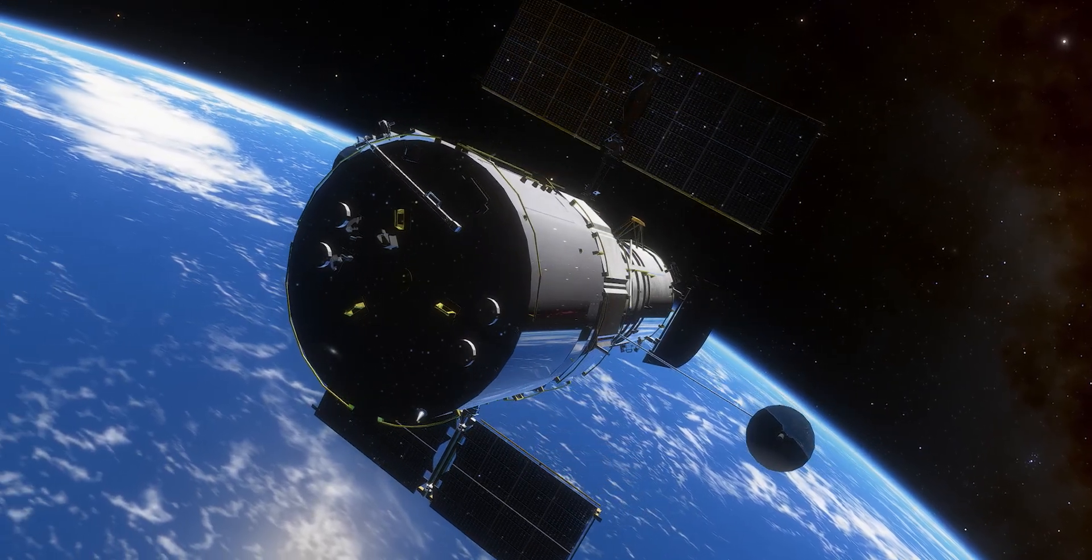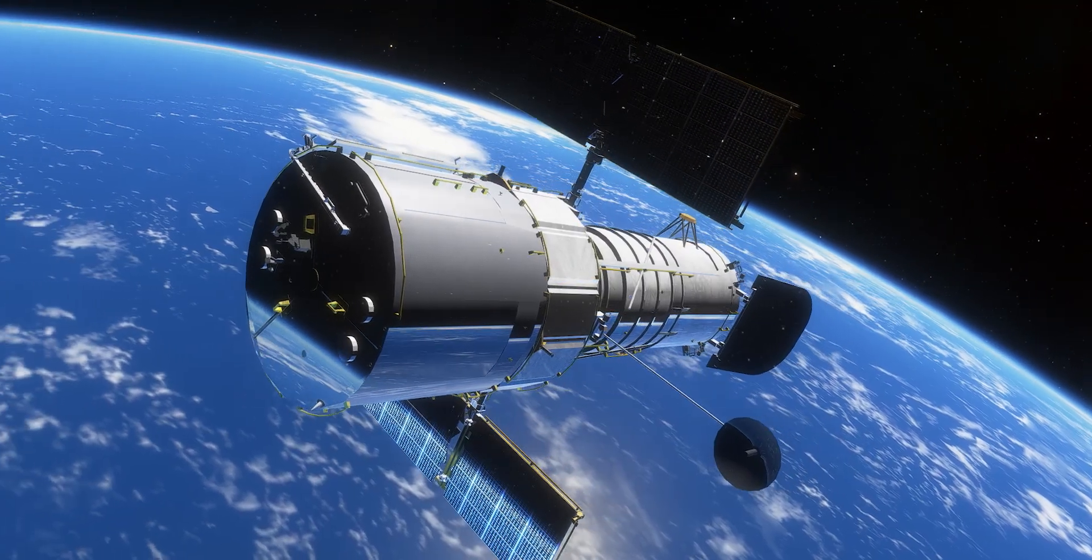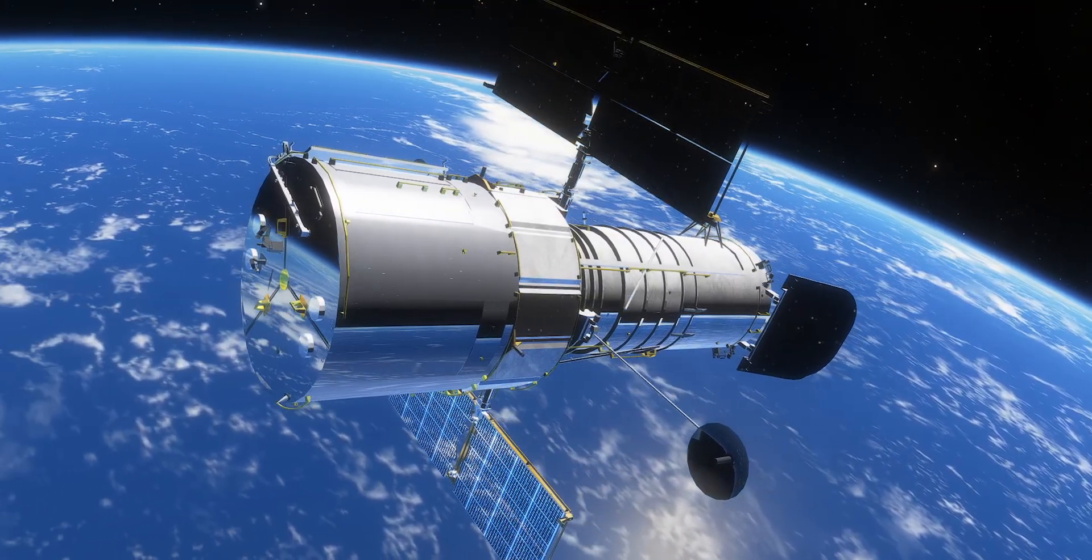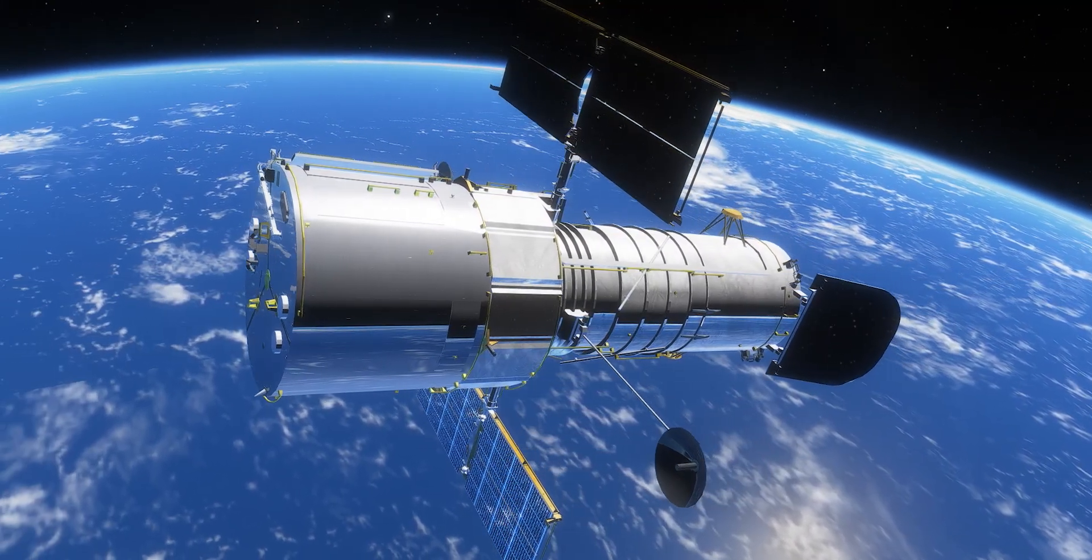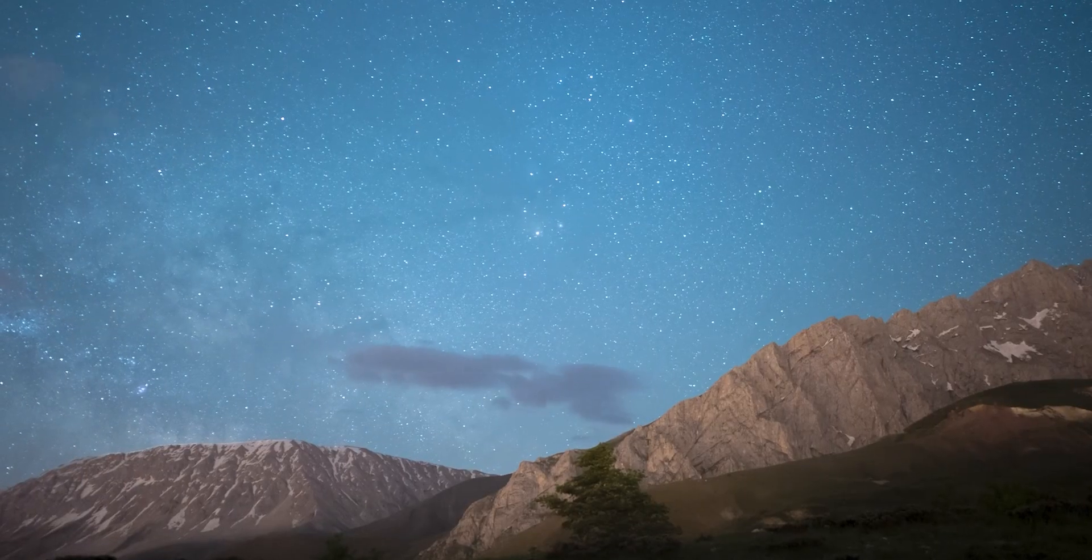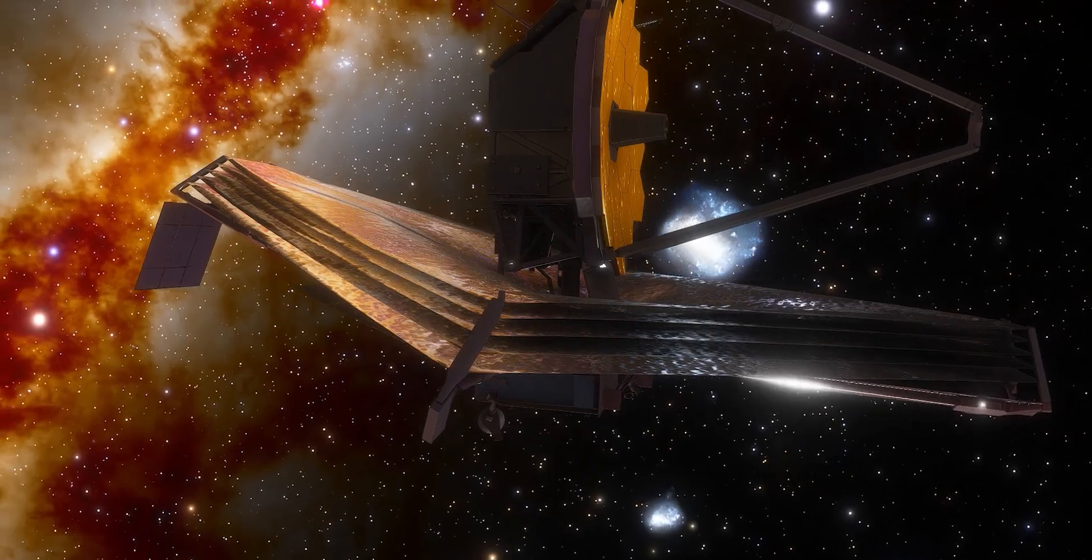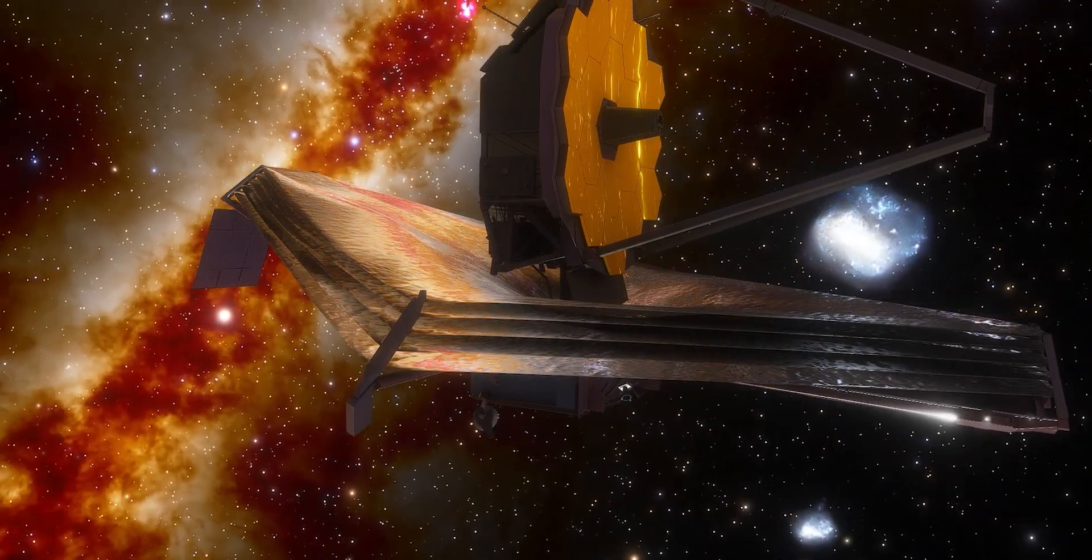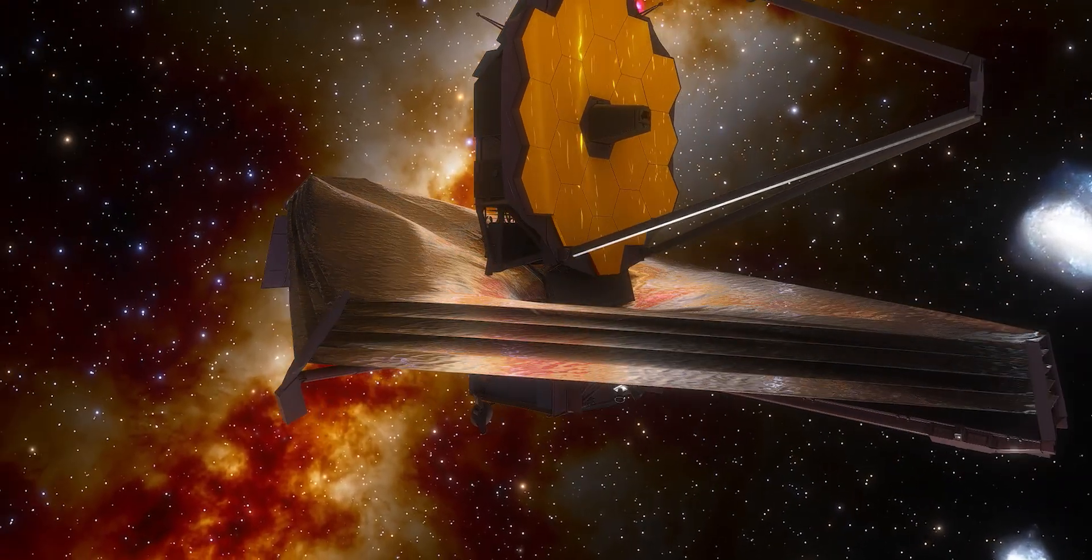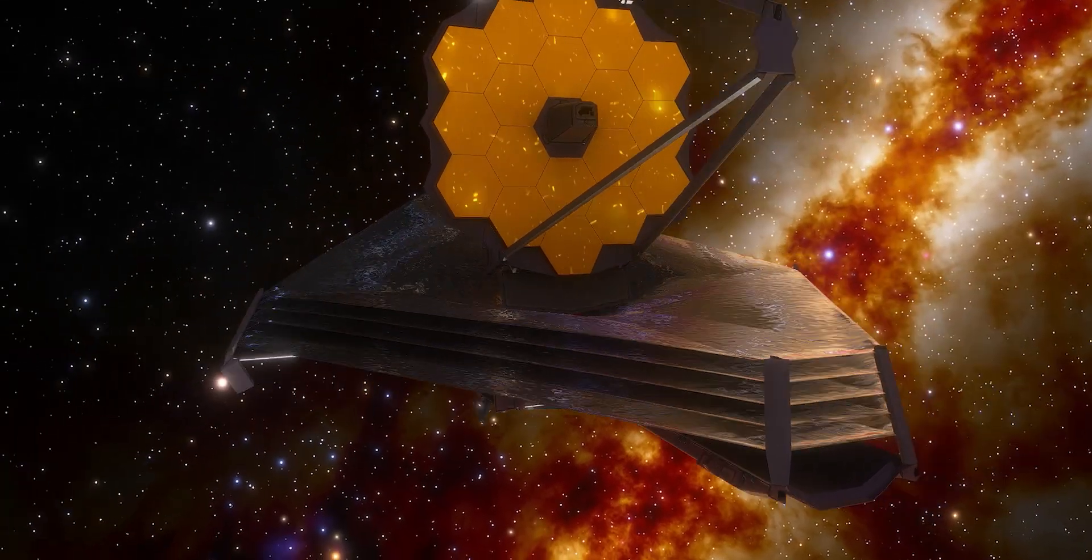But the Hubble data raised new questions. What was driving its brightness? What were those gases made of? And why did its coma appear so uneven, as though light itself was bending differently through it? For answers, scientists turned to a newer eye on the sky, the James Webb Space Telescope. On August 6th, Webb used its NIRSpec instrument to split the comet's faint glow into a chemical barcode.